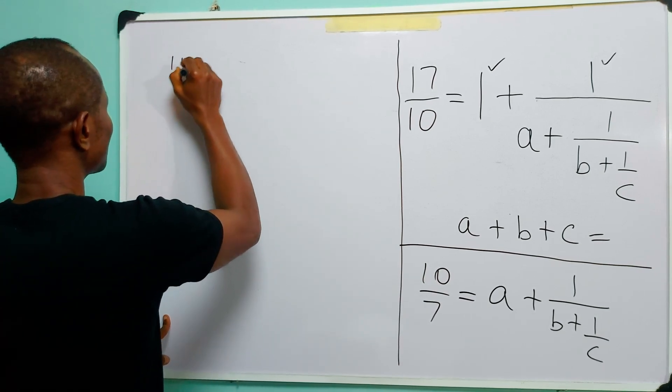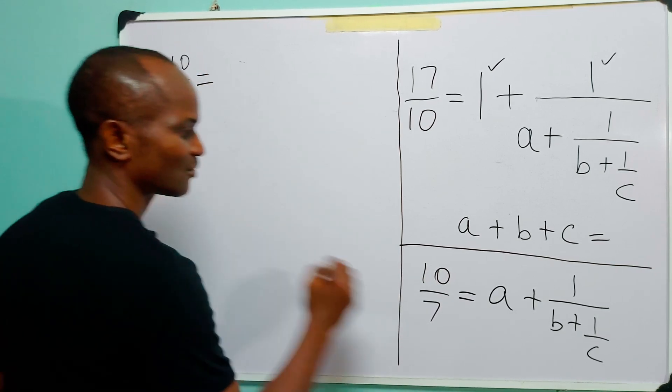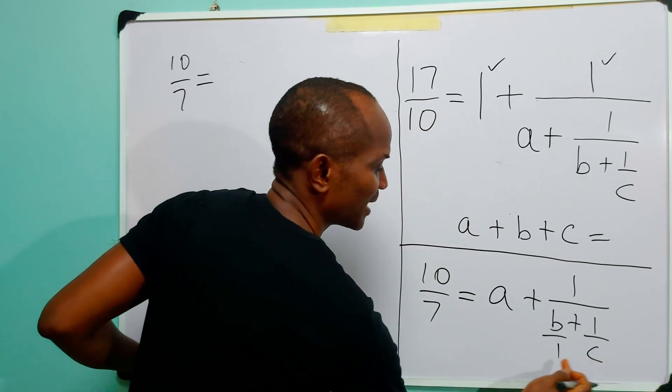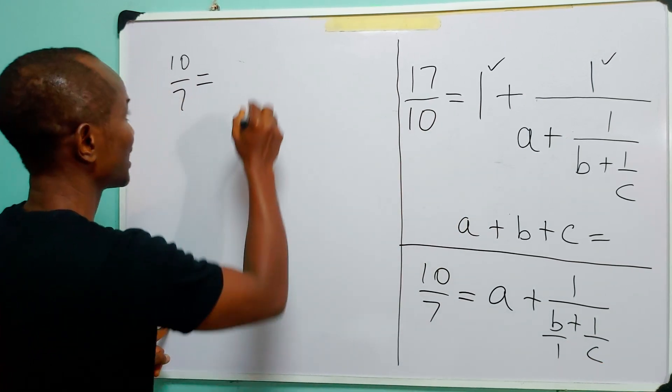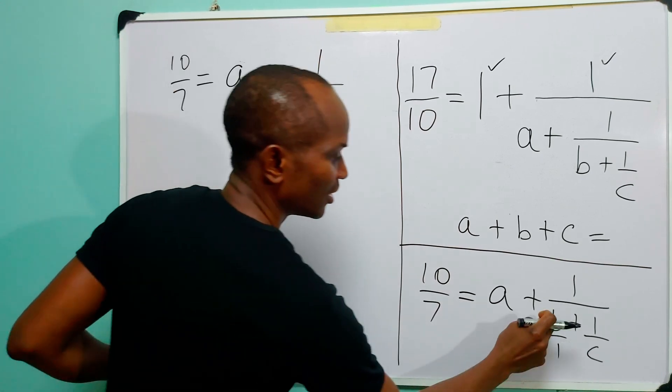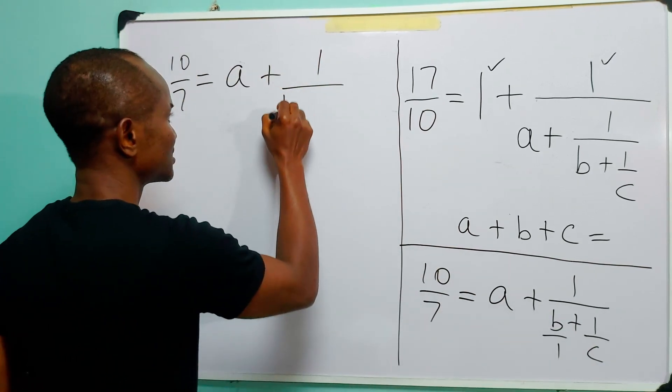So we have that 10 over 7 is equal to, now remember, this is B over 1. Combining these two fractions into one unit, we have that A plus 1 over B times C, which is B...